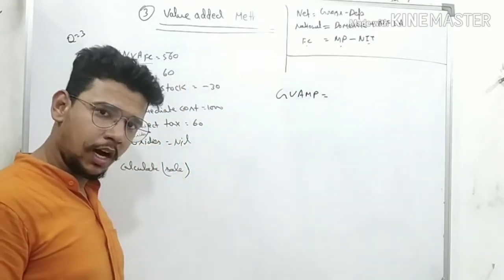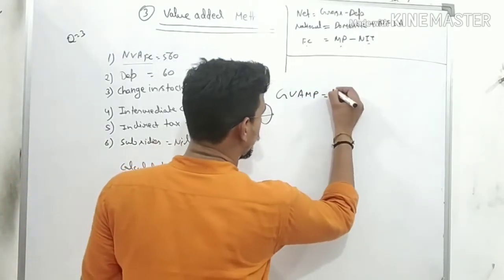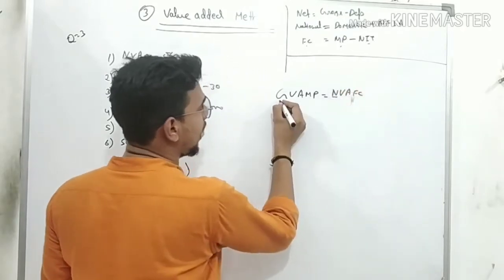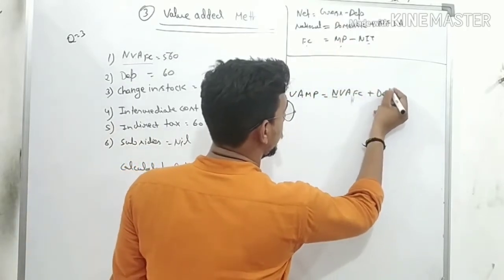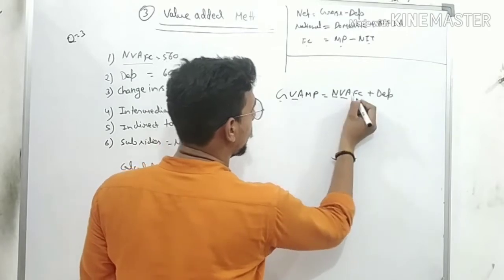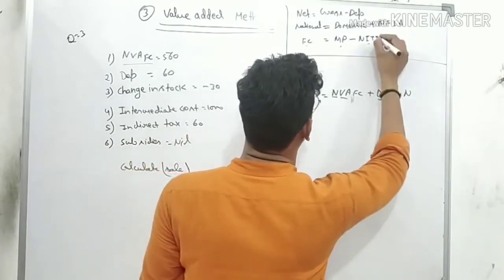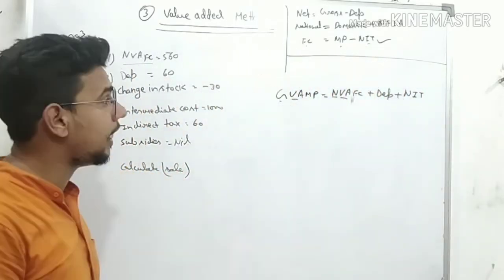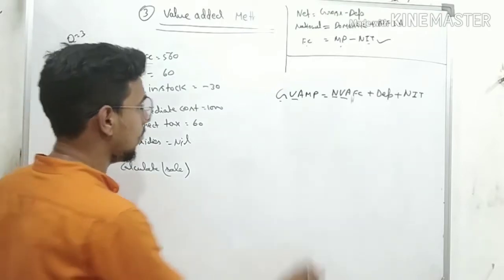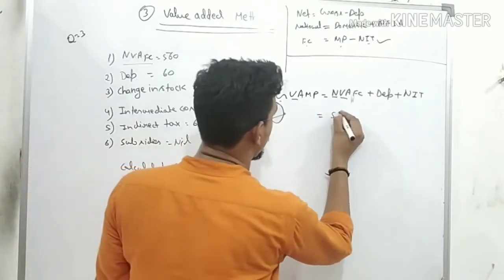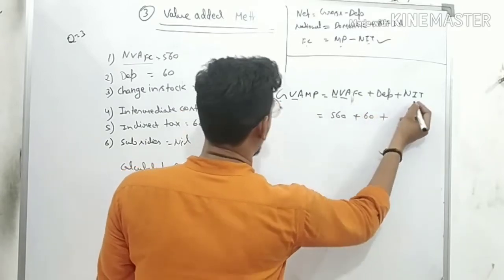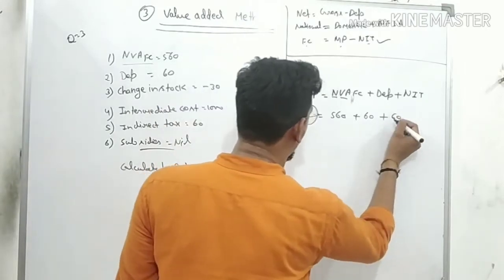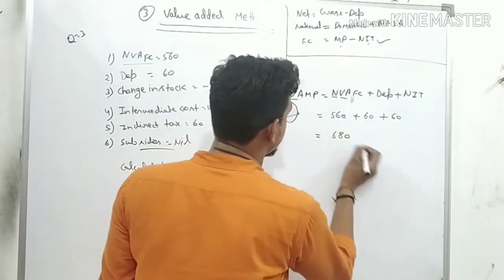From NVAFC, you can work back to GVAMP using conversions. Net → add Depreciation → Gross. Factor Cost → add NIT → Market Price. So: NVAFC + Dep + NIT = GVAMP. Values: NVAFC = 560, Dep = 60, NIT (subsidy is nil so NIT = 60). GVAMP = 560 + 60 + 60 = 680.